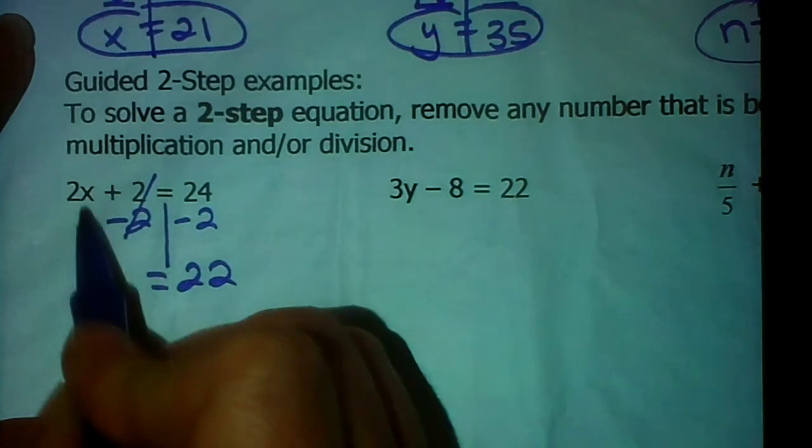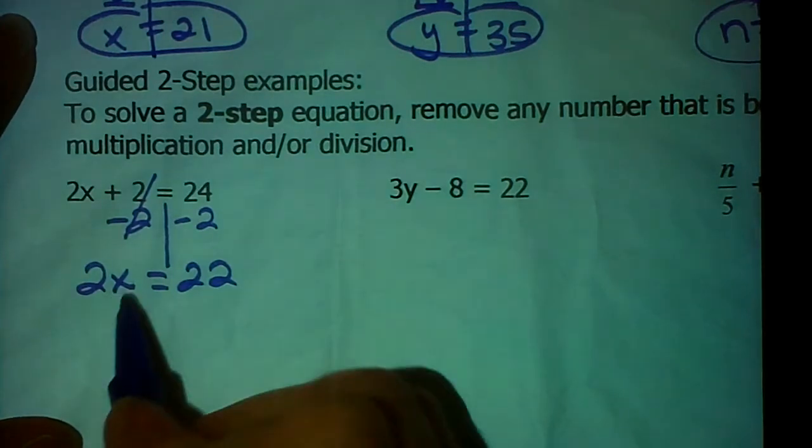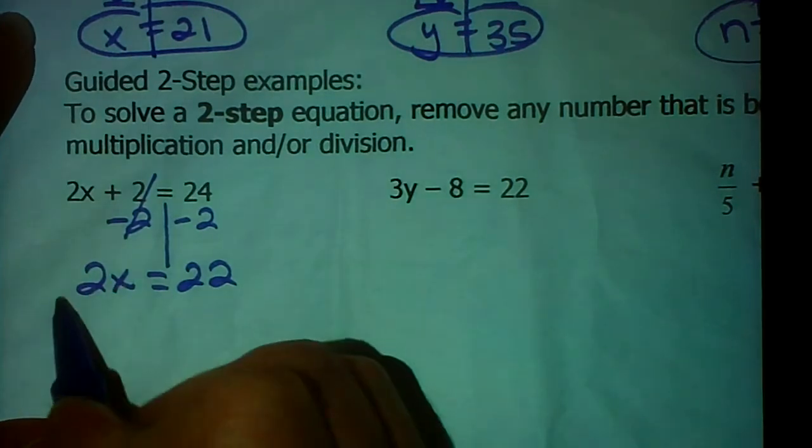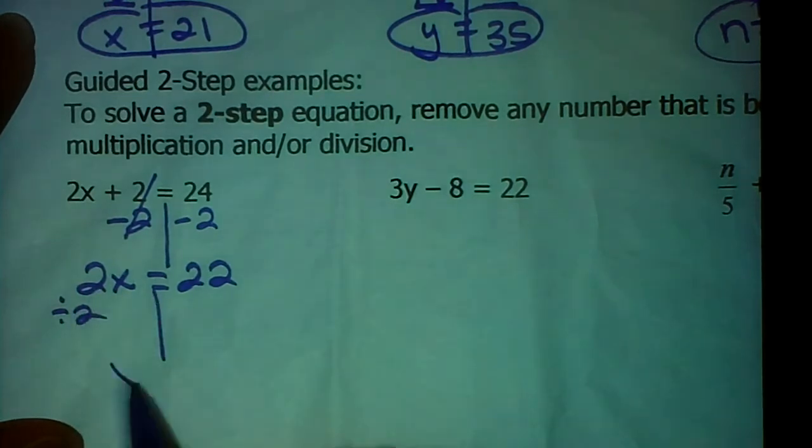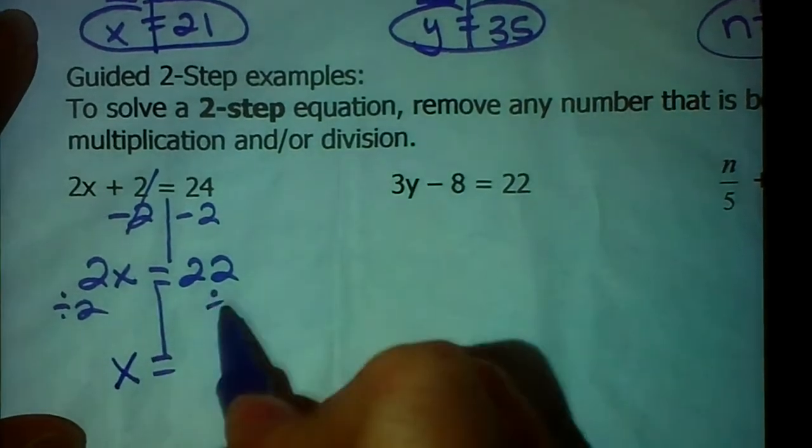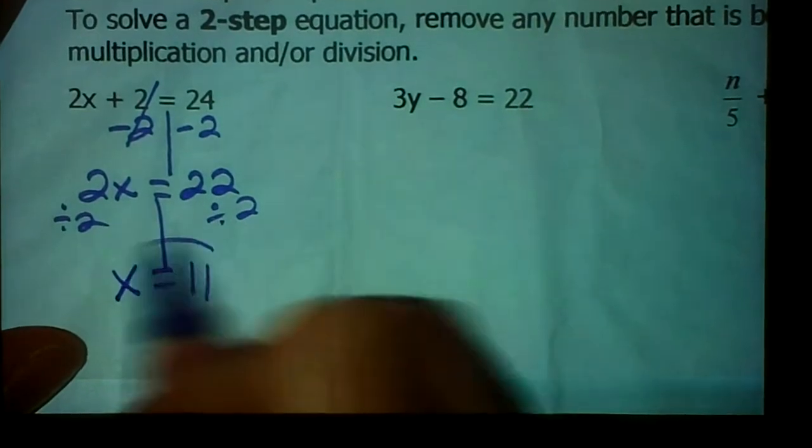But look what I literally have left over here. I have 2 times x. Now it's a little one-step equation. The opposite of multiplying x by 2 would be to divide by 2. And that makes 1x or just plain old x. And I'm going to divide by 2 here. What's 22 divided by 2? 11. X is 11.